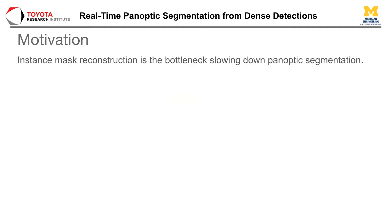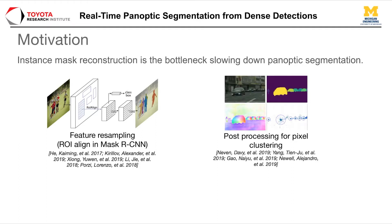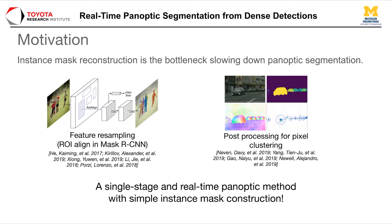Although powerful, existing instance segmentation methods preclude panoptic segmentation models from running in real-time. For example, two-stage methods utilize feature sampling, and one-stage methods often require an extensive post-processing step for pixel clustering. Both approaches slow down the inference speed of panoptic segmentation. Our work aims to develop a simple instance mask construction method for panoptic segmentation to enable real-time inference for real-world systems.